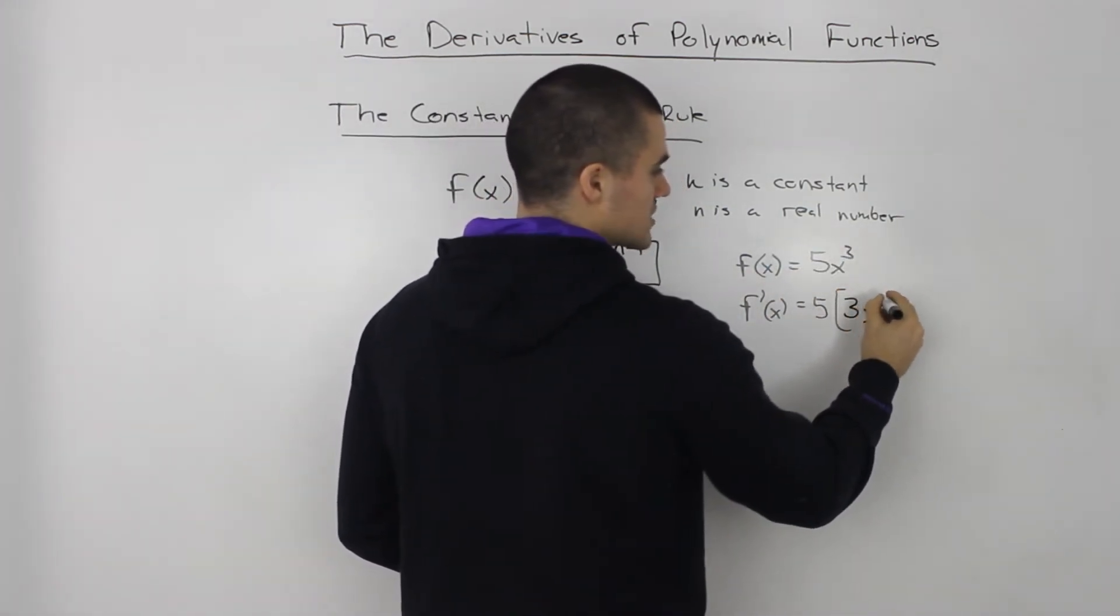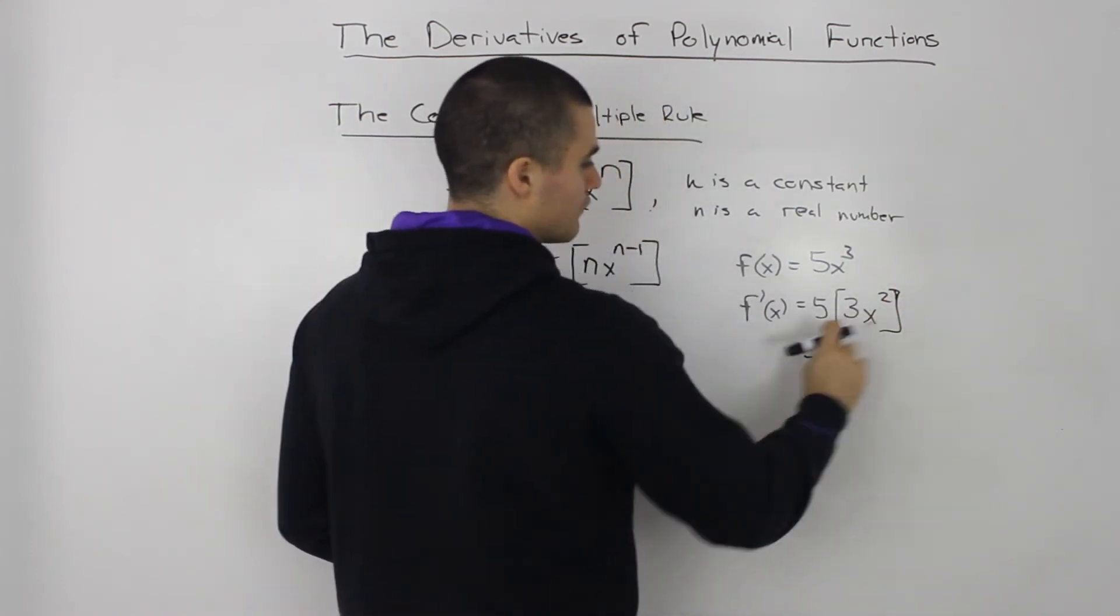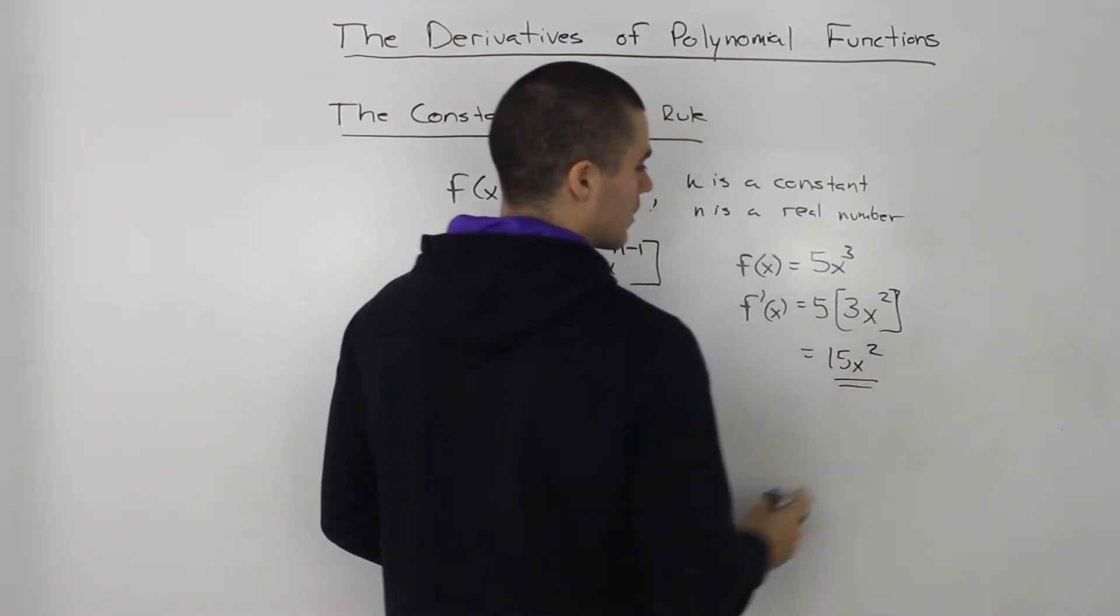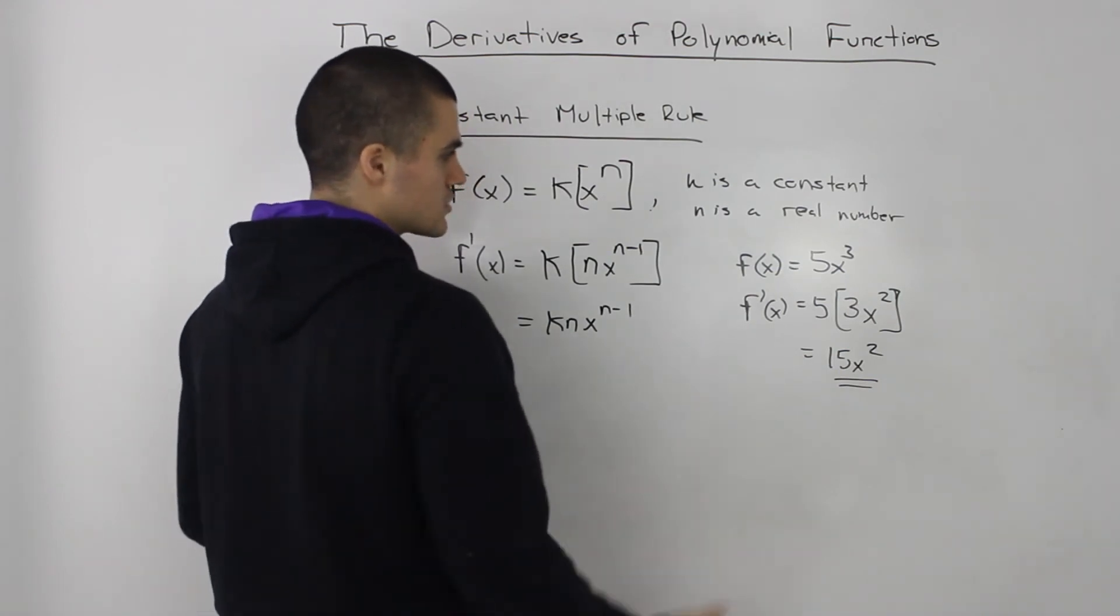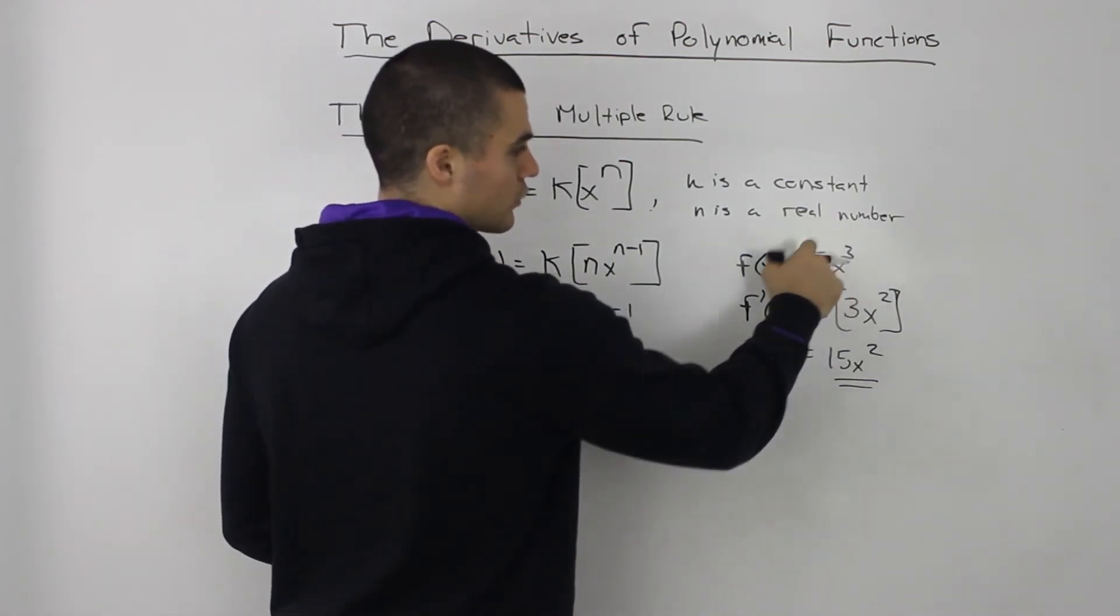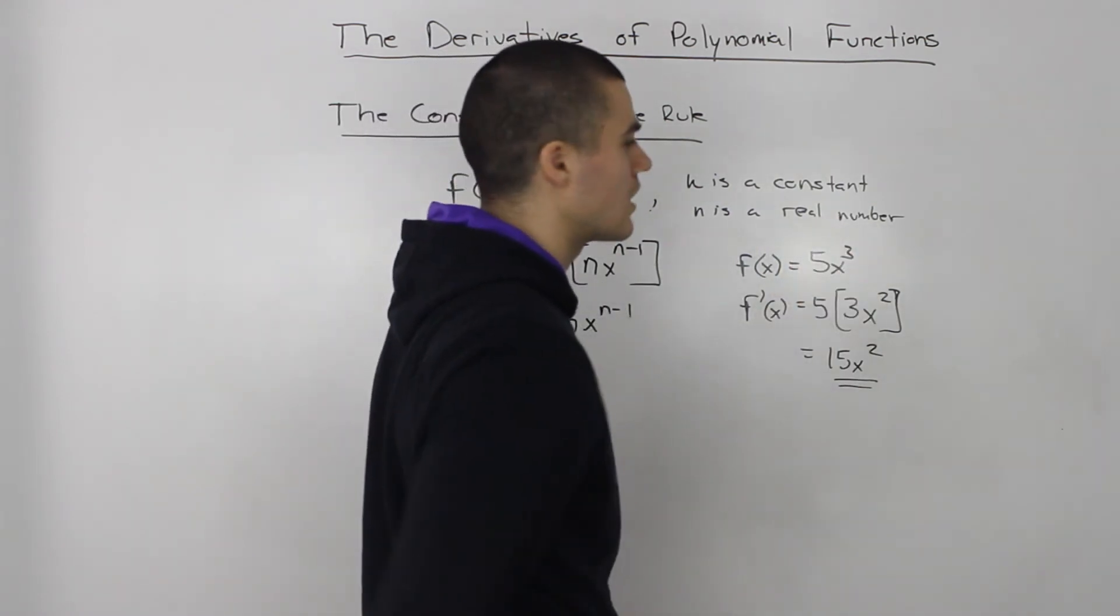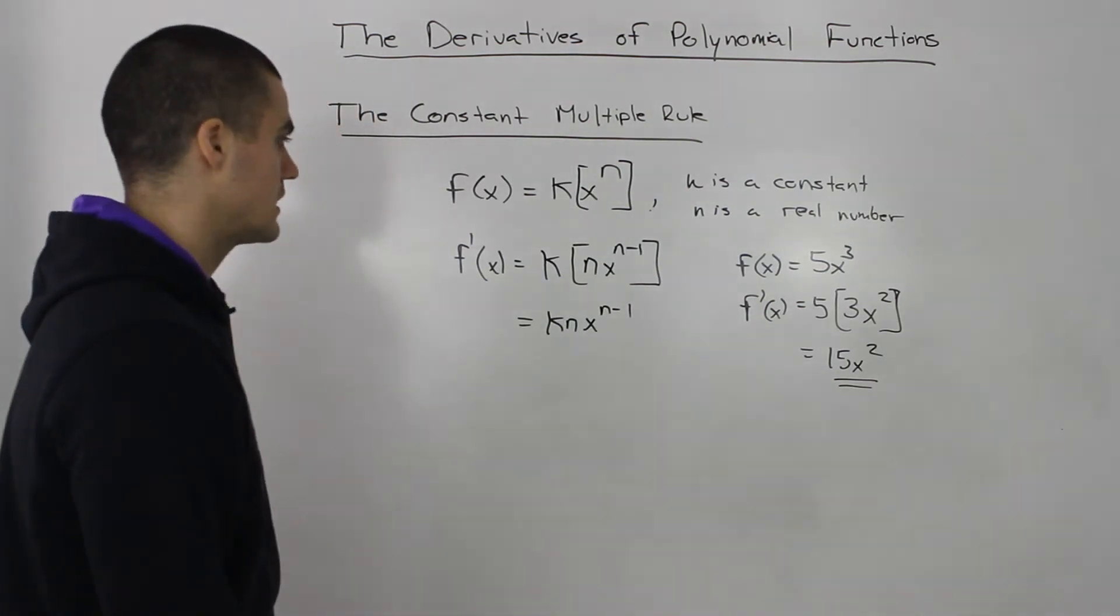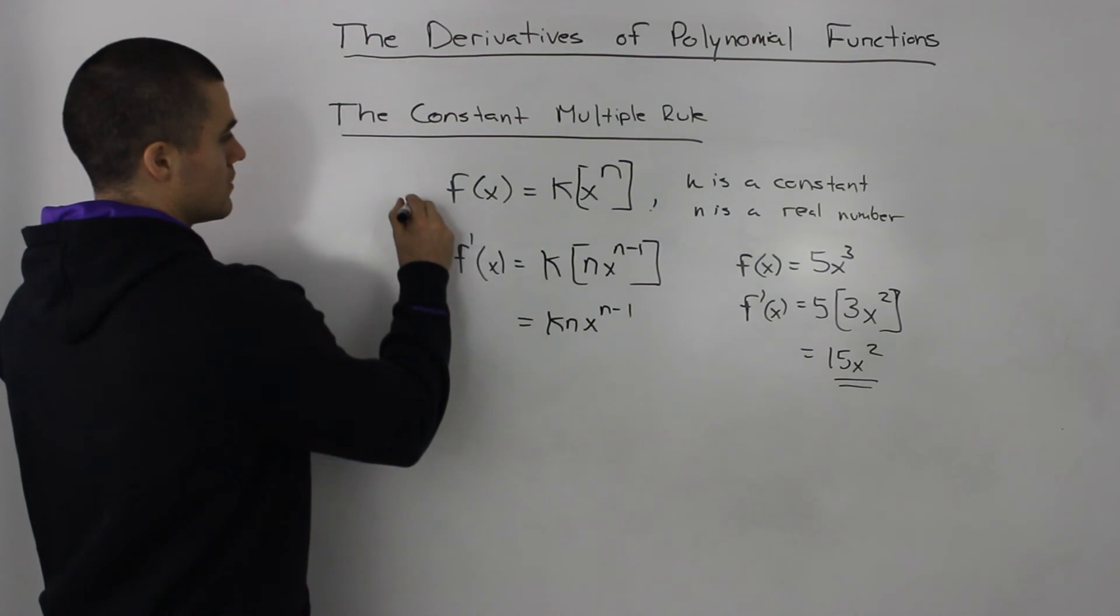and then we minus 1 from the exponent to get 2, and then we can multiply the 5 and the 3 together, so we'll get 15x². All right, so the derivative of 5x³ is just 15x². So just a quick way to do it: bring the 3 down, 5 times 3 is 15, x to the power 2, which is the degree minus 1. Like I mentioned in the previous video, not going to go over this result, but go over the proof.